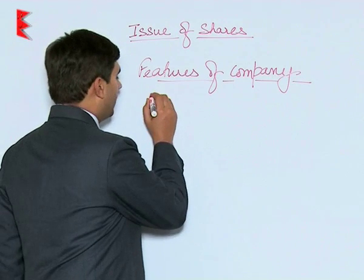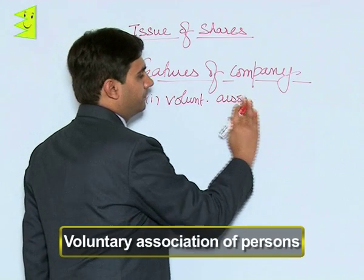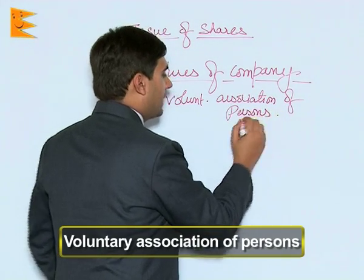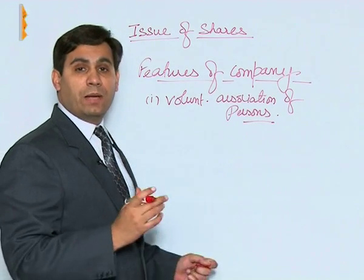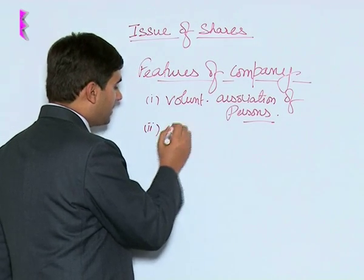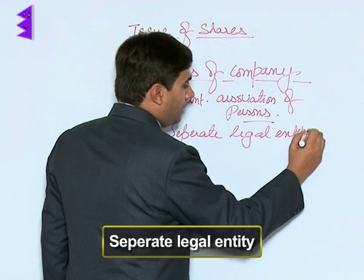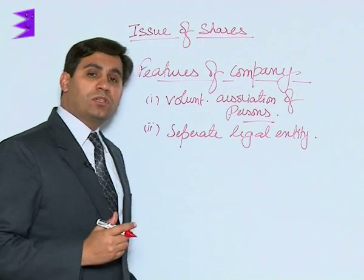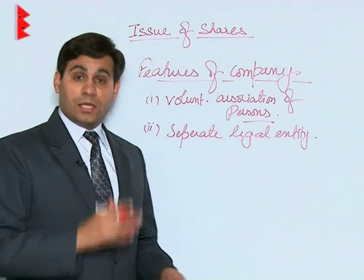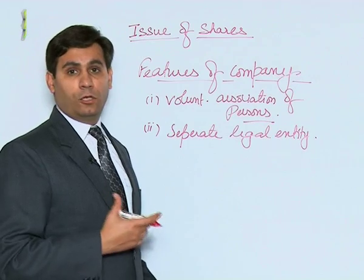The first feature of a company is that it is a voluntary association of persons — the persons who have come together to form a company have done so on a voluntary basis and have not been forced to. A company also has a separate legal entity. Other forms of business like sole proprietorship and partnership do not have any legal existence separate from their owners.